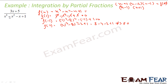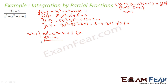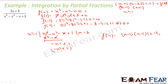Since (x − 1) and (x + 1) are factors, their product (x² − 1) divides the cubic. Dividing x³ − x² − x + 1 by (x² − 1): x³ − x² − x + 1 = x(x² − 1) − (x² − 1) = (x² − 1)(x − 1). So the full factorization is (x − 1)(x − 1)(x + 1) = (x − 1)²(x + 1).